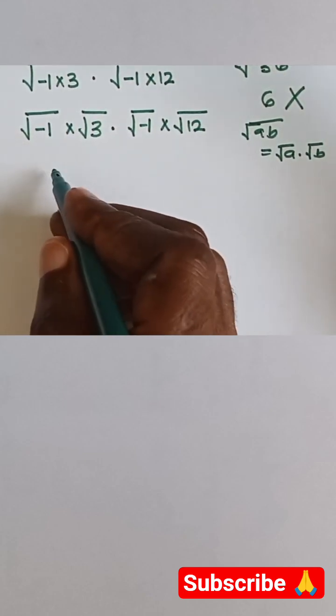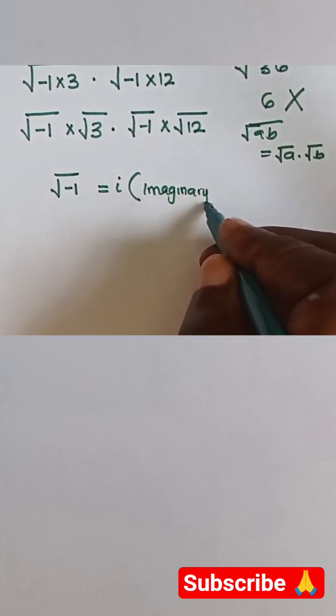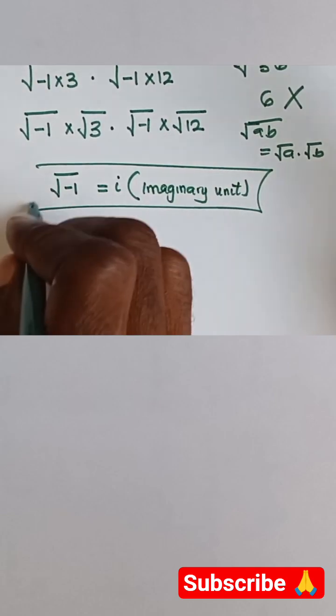Now what is √-1? √-1 is equal to i. That is what we call the imaginary unit. So √-1 is i.